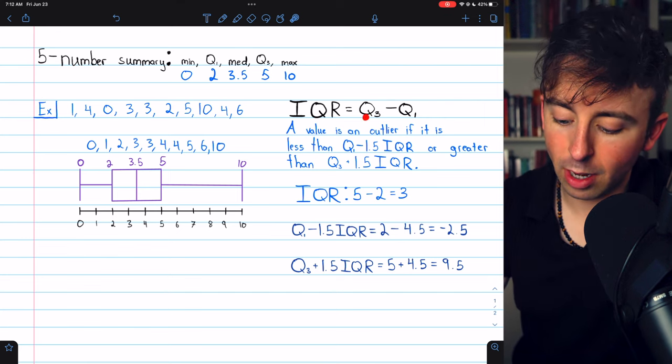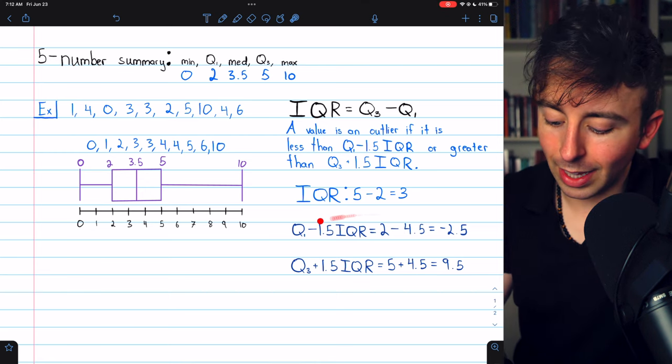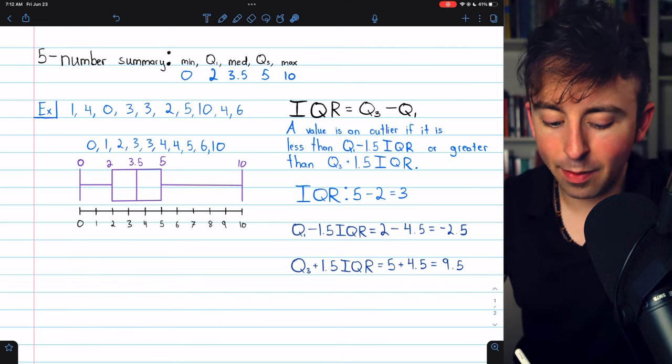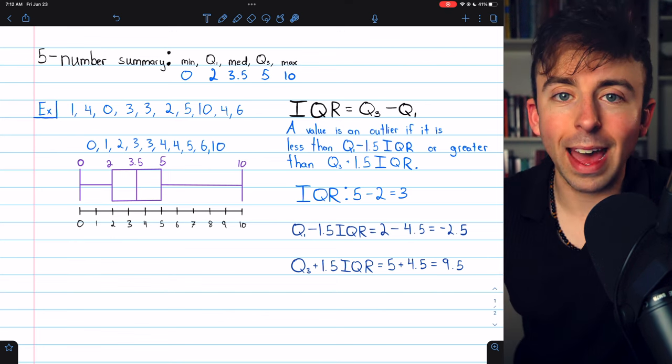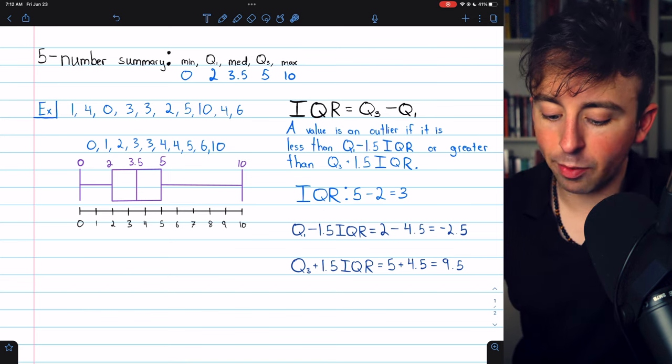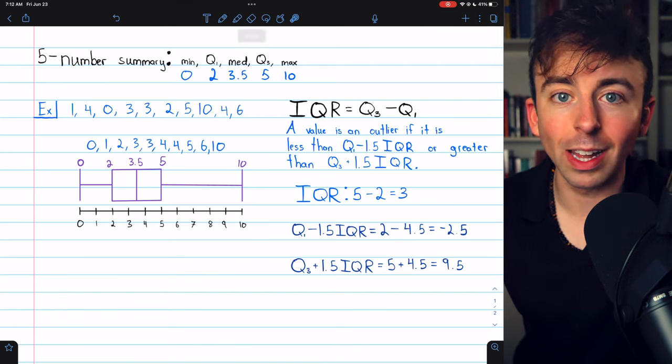The IQR in our case, Q3 minus Q1, is 3. Once we run the calculations, we get a lower fence of negative 2.5, and none of our data is below that, so there are no lower outliers. But our upper fence is 9.5, so we see 10 is indeed an upper outlier.